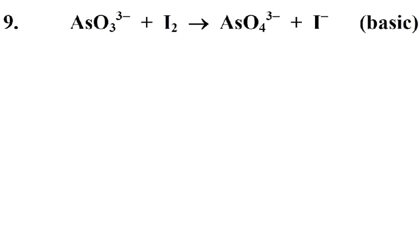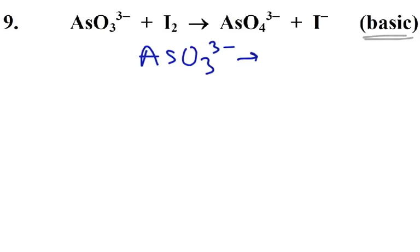Okay, question nine. This is in a basic solution, so we're going to keep that in mind - we're not going to do anything with it until the last step. Our first equation looks like arsenic... it contains arsenic. That would probably be the arsenite ion, or arsenate. Anyway, AsO3 is going to turn into AsO4 three-minus.